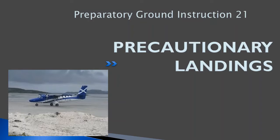A precautionary landing is a landing with engine power that's unplanned or you're unsure of the surface. This is actually a really important lesson to know. You'll find yourself doing precautionary landings quite often if you're flying floats or skis, where you're never sure of the surface that you're landing on, or even sometimes you're landing on a runway that nobody else has landed on in a while and you just need to make sure that it's suitable for landing.